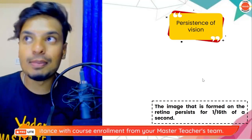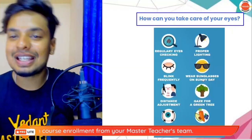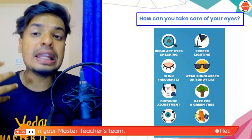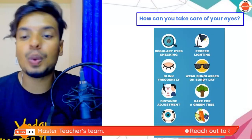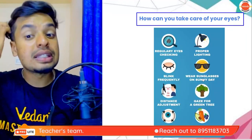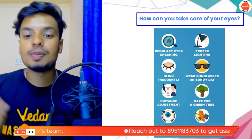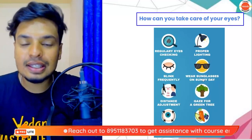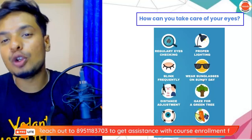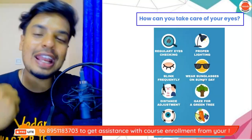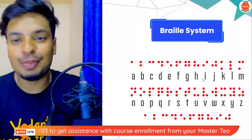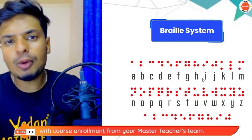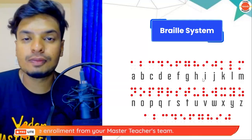How do we take care of our eyes? Get regular check-ups, study in proper lighting, blink frequently, wear sunglasses on a sunny day, maintain proper distance, gaze at a green tree for eye exercise, and eat healthy food. All of these are things we can do to take care of our eyes.